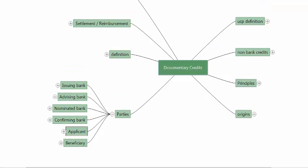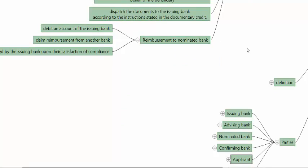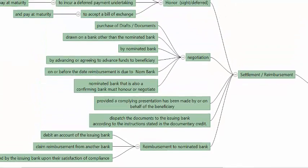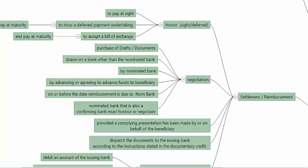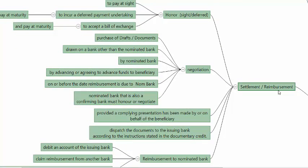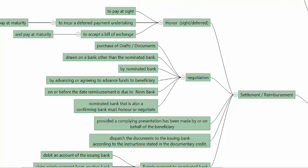When we look at the settlement and reimbursement aspect, the beneficiary must make a presentation — submitting the documents called for under the credit and evidencing compliance with the terms and conditions. Once the beneficiary submits compliant documents, honor or negotiation will take place. After honor or negotiation, the nominated bank will dispatch the documents to the issuing bank according to the instructions on the credit. The nominated bank is the one who effects settlement or reimbursement.